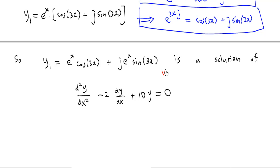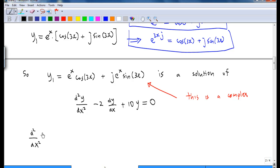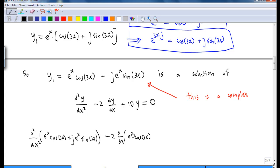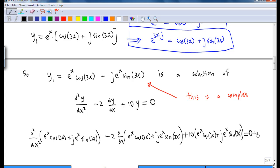But then you ask: this is complex, and we do not want a complex solution. Well, we can overcome this by putting y1 into the equation. Differentiating twice: e^x cosine 3x plus j e^x sine 3x, minus 2 times the derivative of e^x cosine 3x plus j e^x sine 3x, plus 10 times (e^x cosine 3x plus j e^x sine 3x) equals 0, which equals 0 plus j times 0.